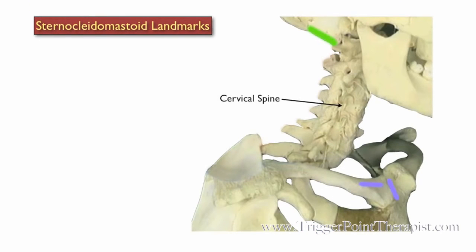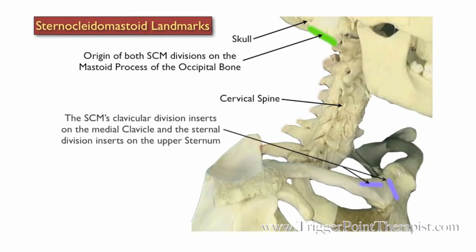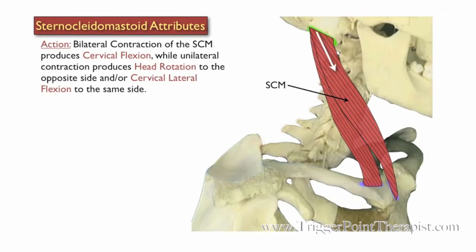Here are the landmarks for the SCM: the cervical spine and the skull. The origin of both SCM divisions is on the mastoid process of the occipital bone. The clavicular division of the SCM inserts on the medial clavicle, and the sternal division inserts on the upper sternum. Bilateral contraction of the SCM produces cervical flexion, while unilateral contraction produces head rotation to the opposite side and/or cervical lateral flexion to the same side.